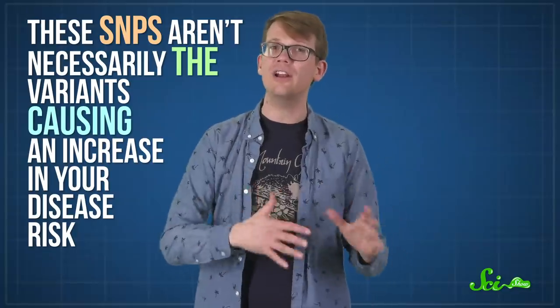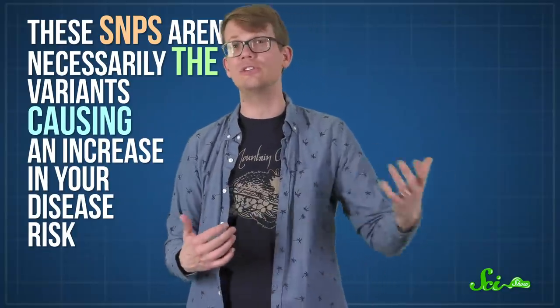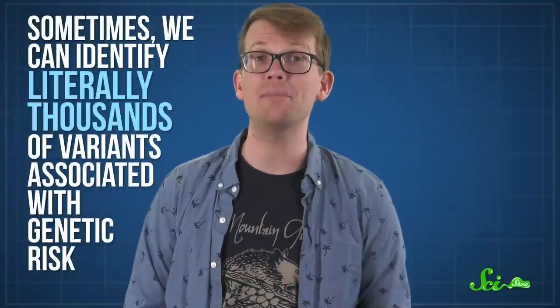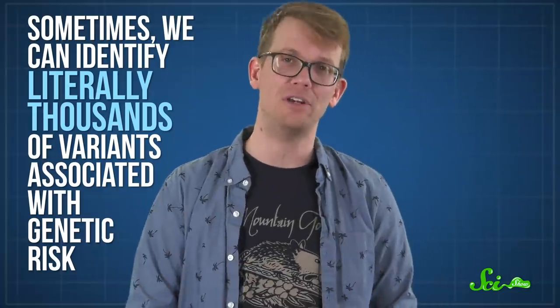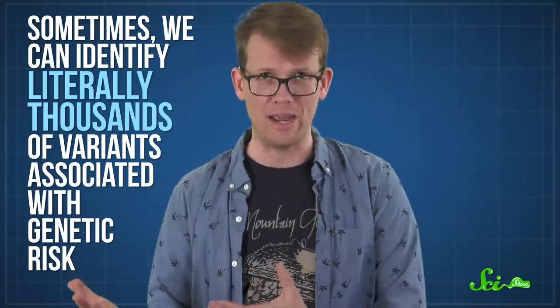These SNPs aren't necessarily the variants causing an increase in your disease risk, mind you. They may just happen to lie in close proximity to the ones that did. And because of that, they're inherited alongside them. By surveying for SNPs and inheritance patterns in these large studies, we can finally see the thousand cuts, metaphorically speaking, of course. And thousands isn't an exaggeration. Sometimes we can identify literally thousands of variants associated with genetic risk.